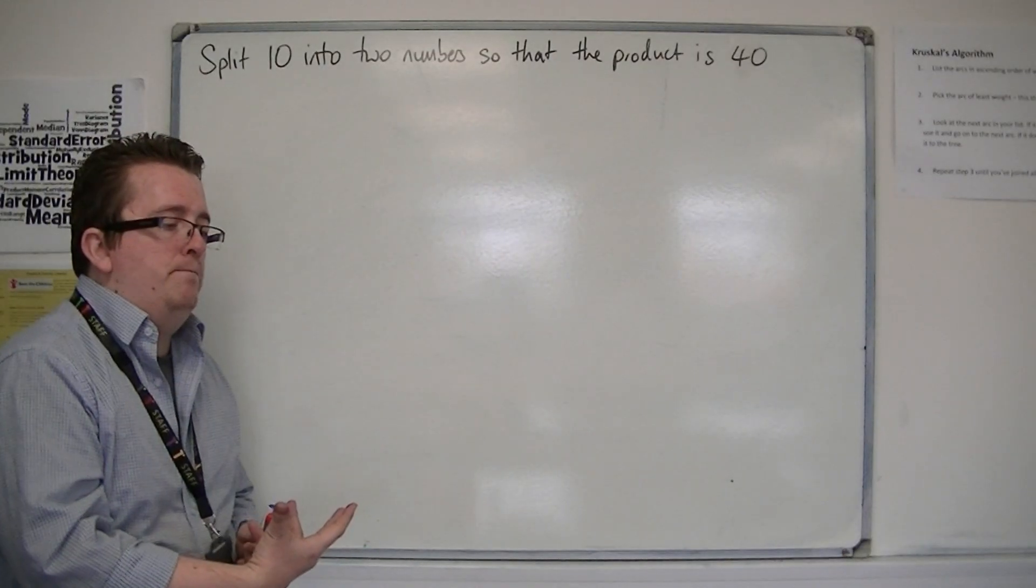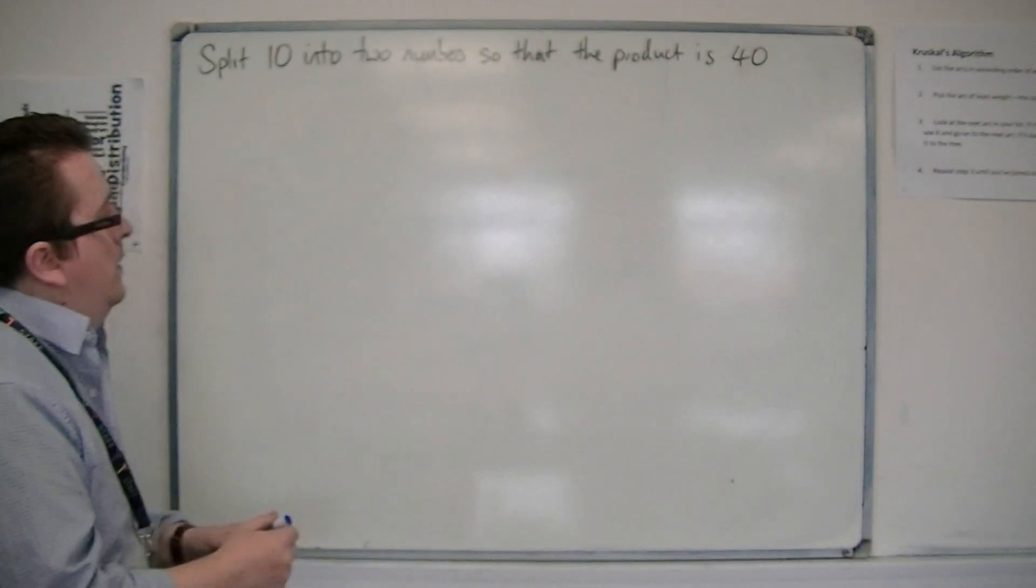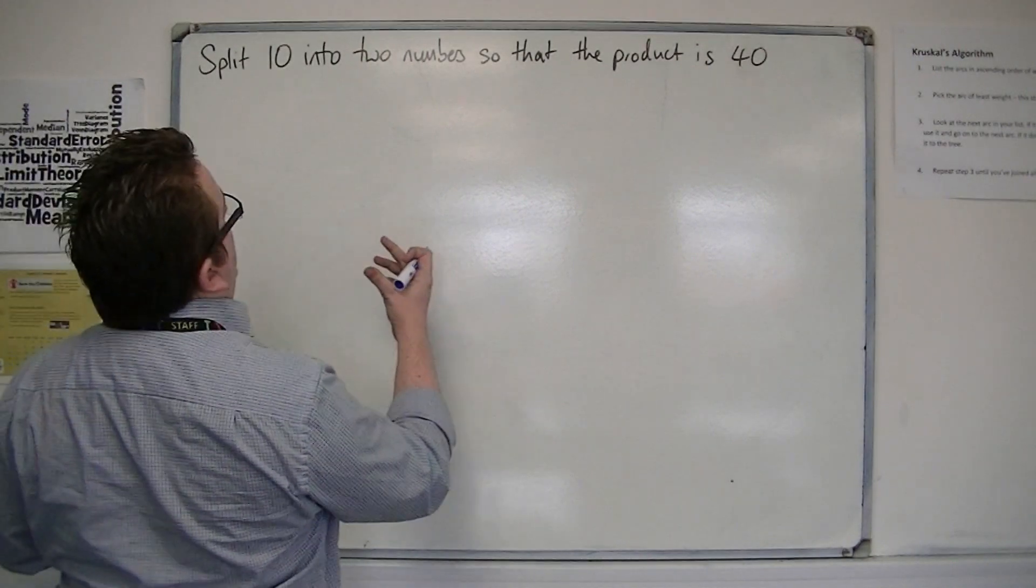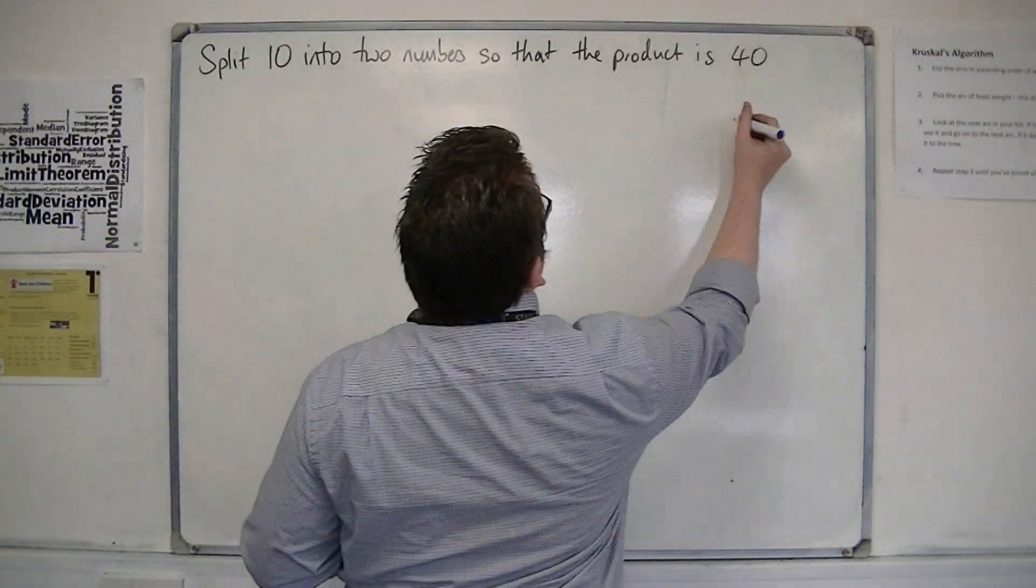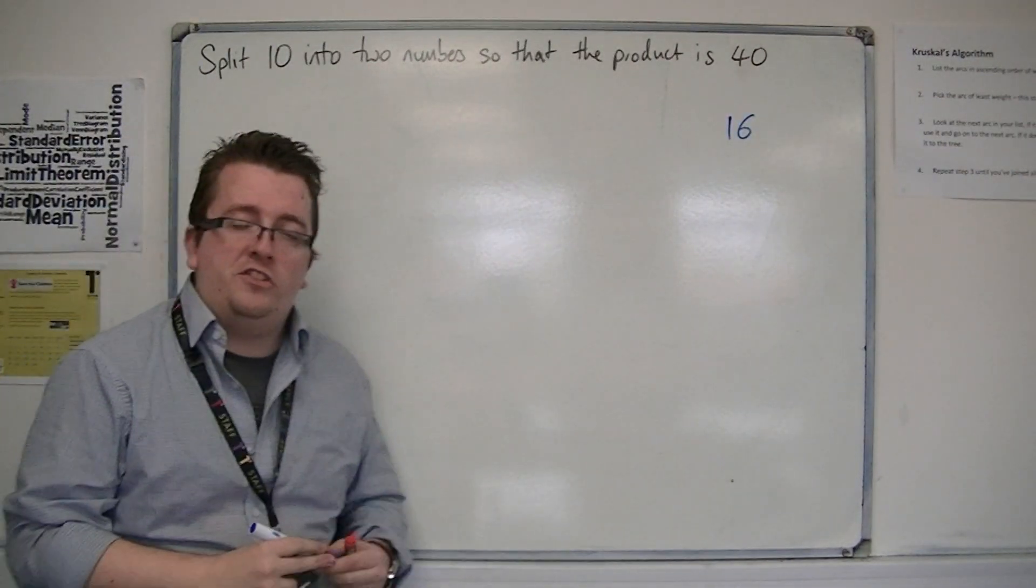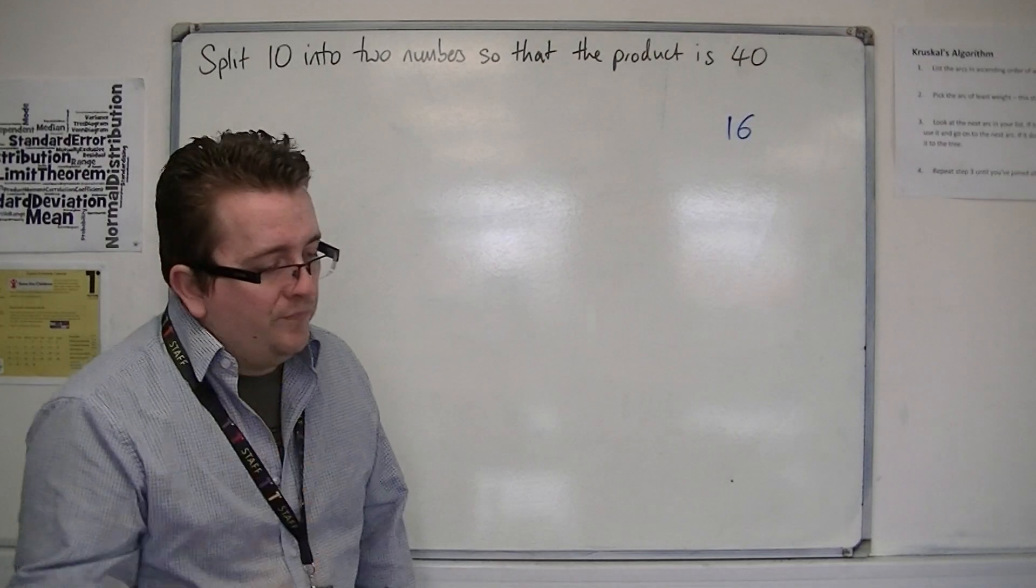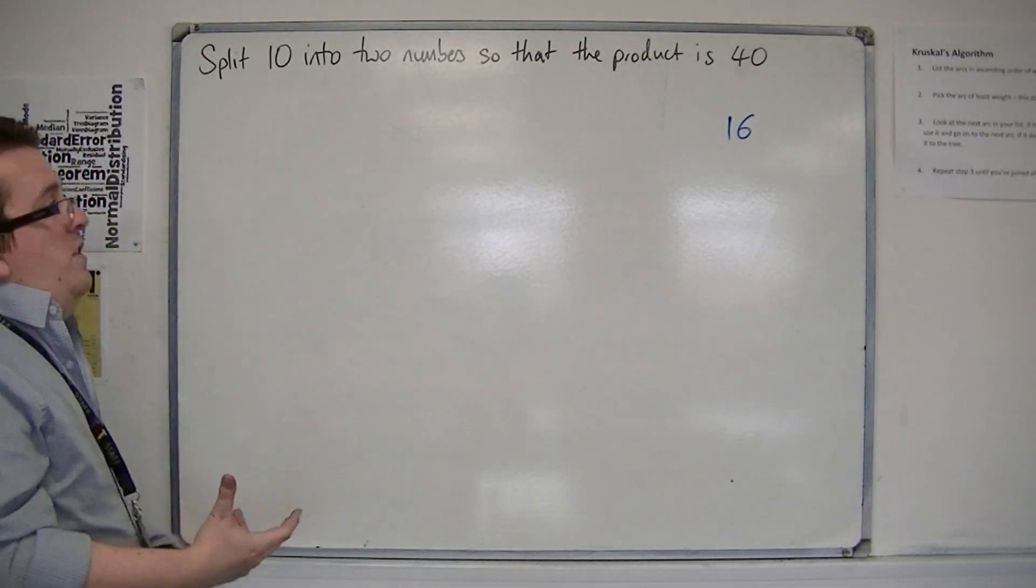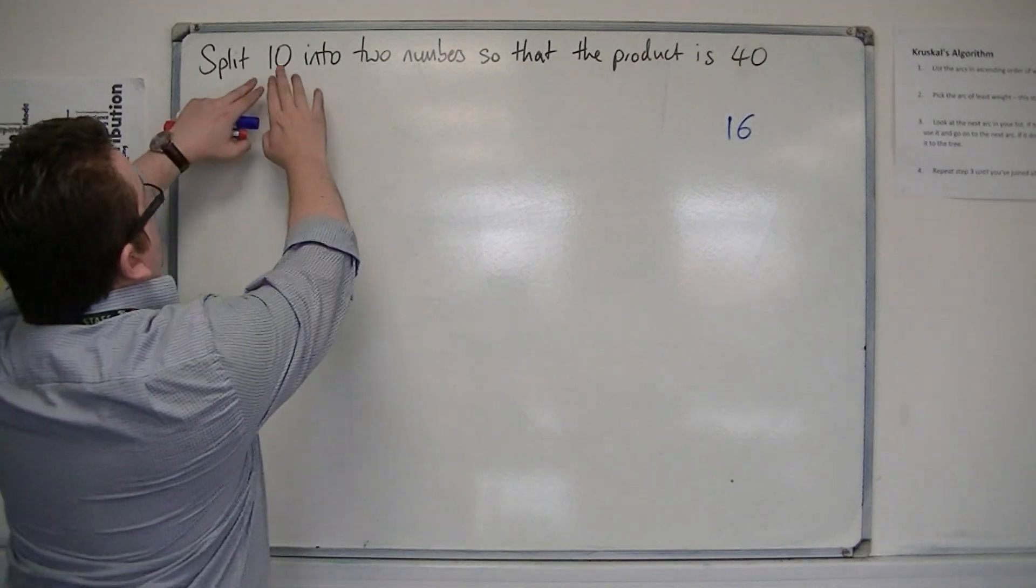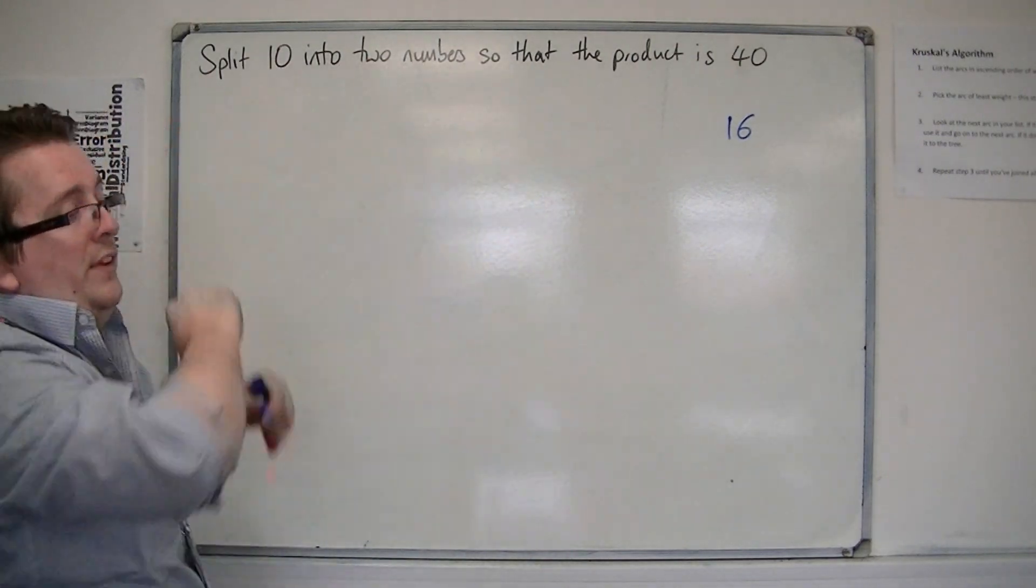But I want to show you a method that will work. So let's say instead we want to split 10 into two numbers so that the product is 16. Let's go for 16 instead, just to start us off. I can already say that's going to be 2 and 8. So 2 and 8 make 10, product is 16.